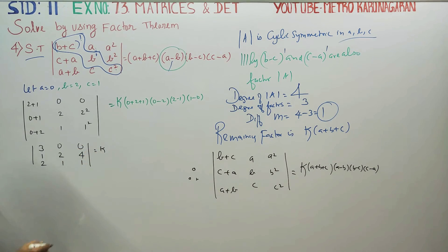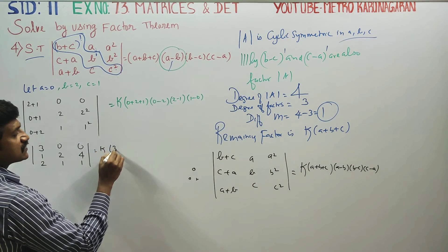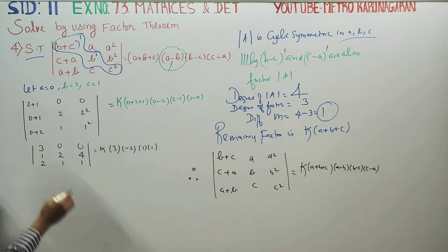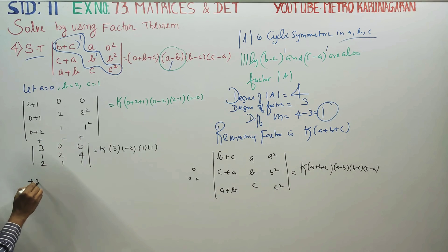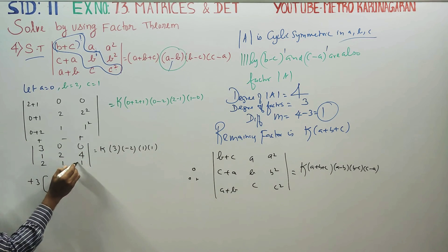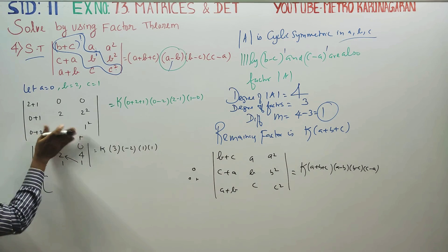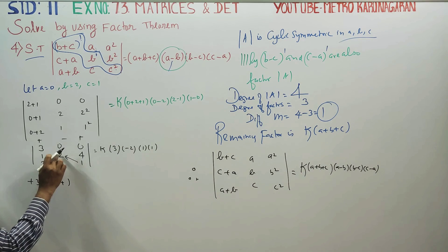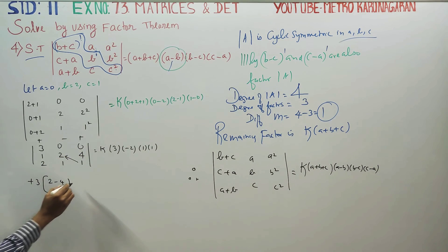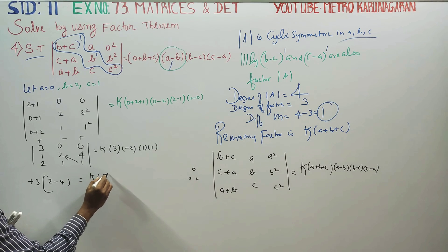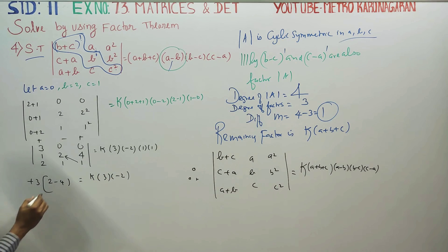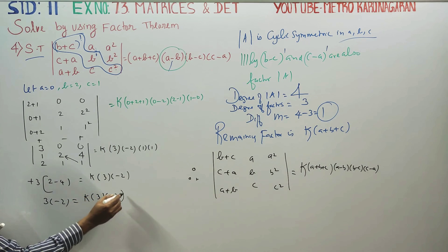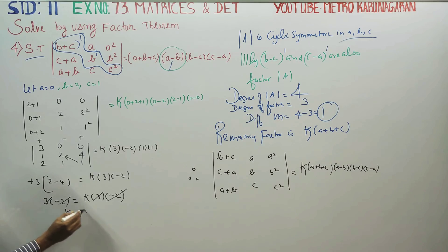Expanding this determinant equals k times (a+b+c)(a−b)(b−c)(c−a) = k × 3 × (−2) × 1 × 1 = k × (−6). Evaluating the left-hand side: 3 into (2−4) = 3 into (−2) = −6. So −6 = k × (−6), therefore k is equal to 1.